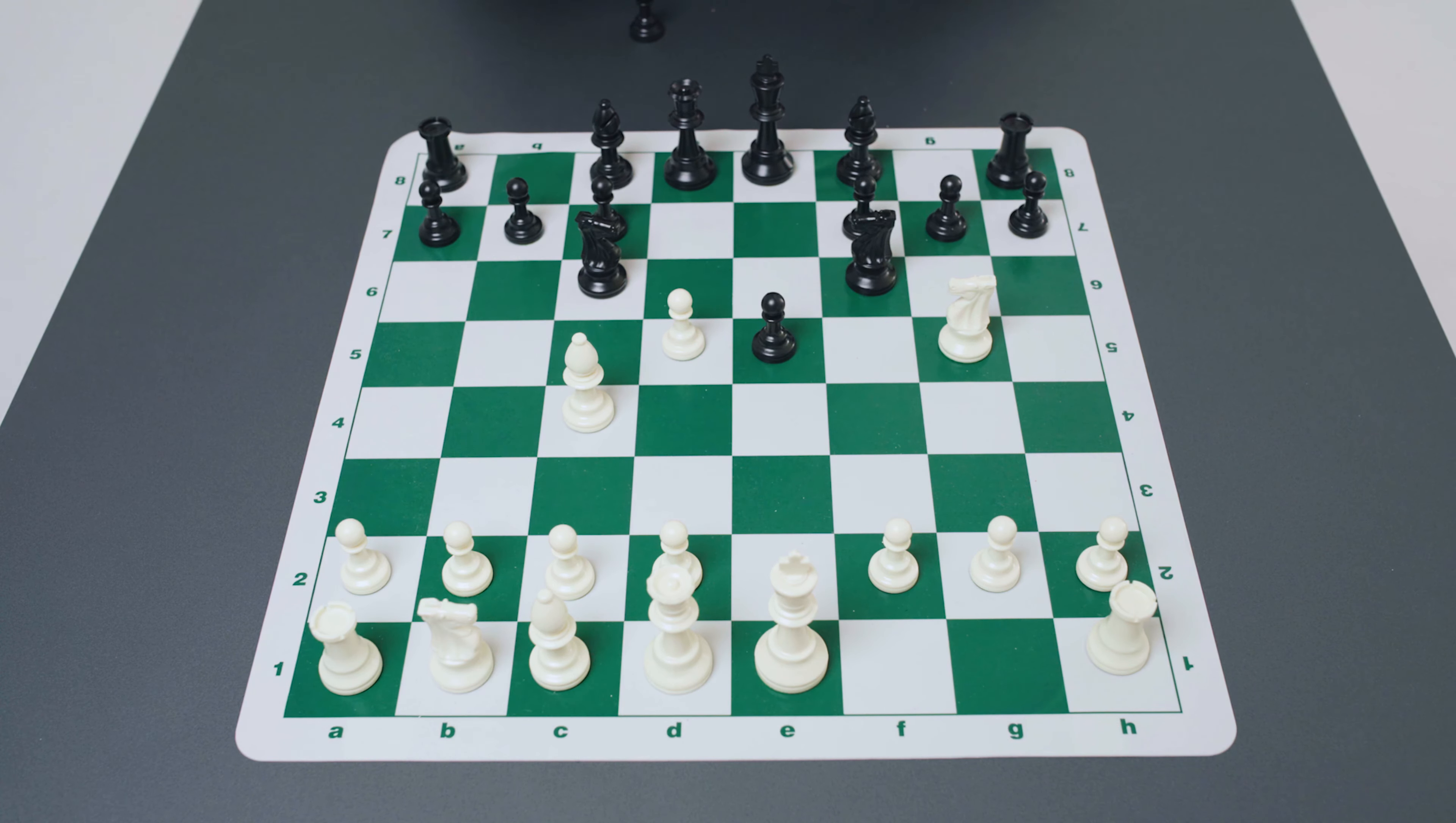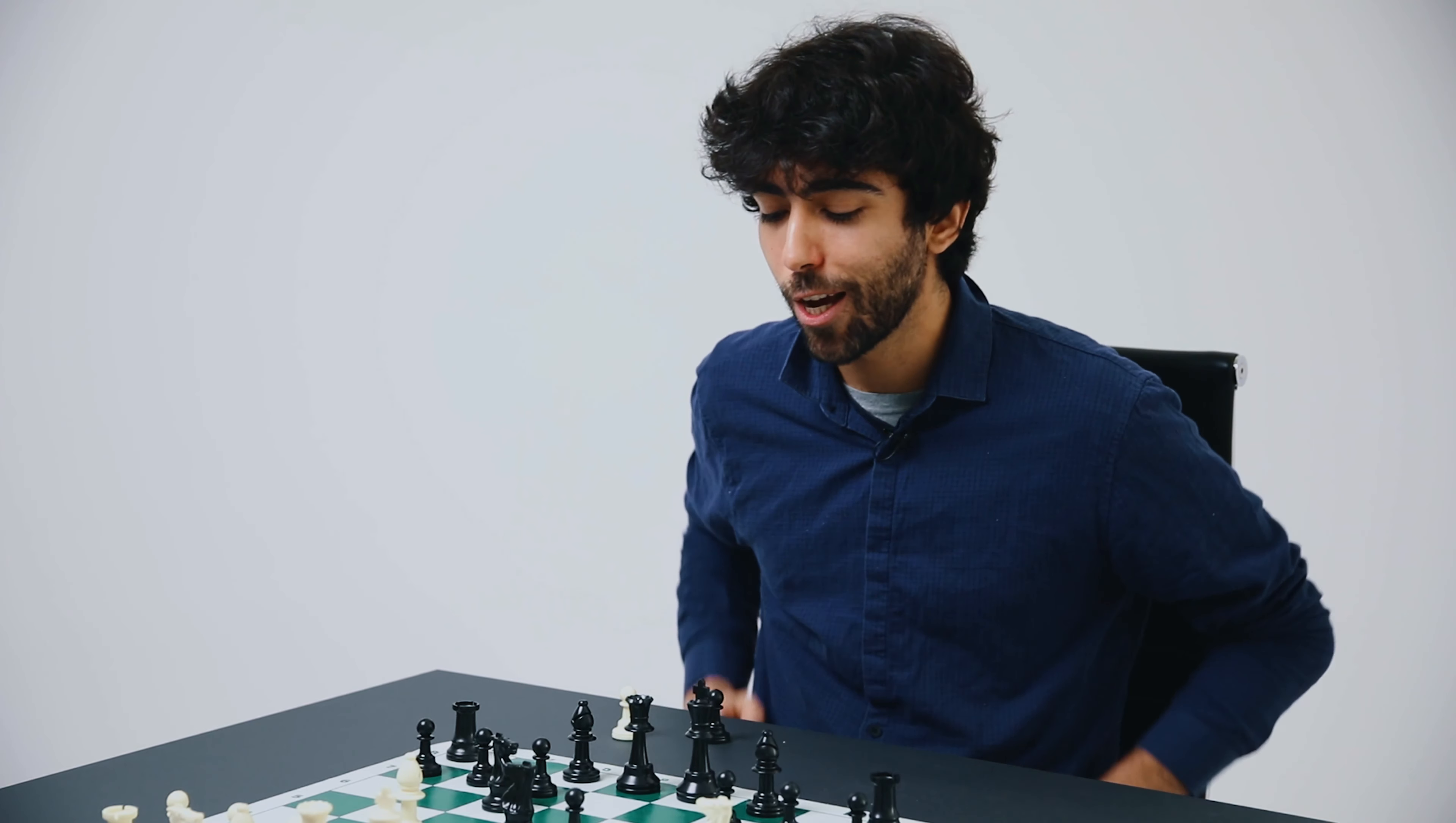This is generally less popular because as we've already seen white usually likes to reserve this square for the pawn so that the pawn can push onto c3, control the d4 square and fight for the center. Nevertheless we will take a quick look at the move knight to c3 in the future.